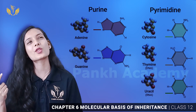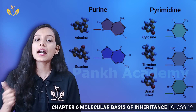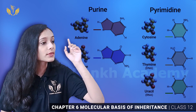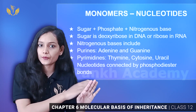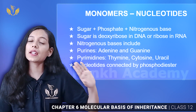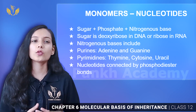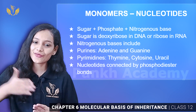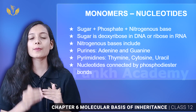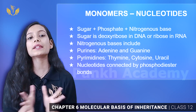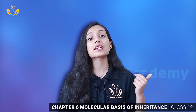Uracil is not in DNA — uracil is only in RNA. So if we talk about DNA, the bases are ATGC. If we talk about RNA, the bases are AUGC — adenine, uracil, guanine, cytosine. These things will be advanced since you have come to class 12, so you have to level up your mind. DNA has ATGC and RNA has AUGC.